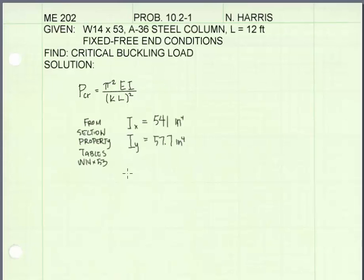So if we went to section property tables and looked up the W14 by 53, we'd find two values for moment of inertia. The strong axis moment of inertia and the weak axis moment of inertia for our column, which is fixed at the base and free at the top, the weak axis moment of inertia will control.